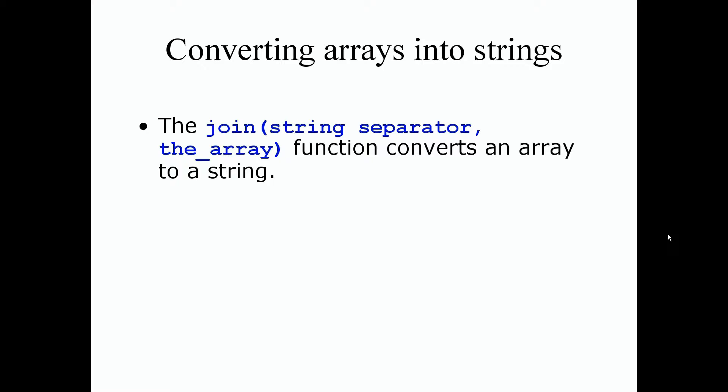The join operator takes two arguments or parameters. The first one is a separator of string type, a string character to separate the values in an array. The second parameter is the array itself, the entire array to convert.